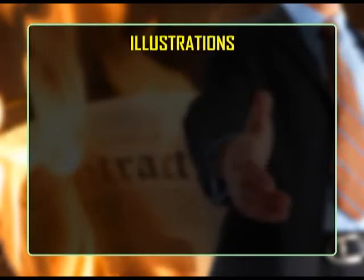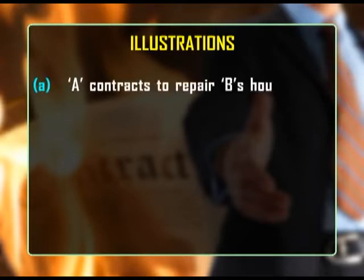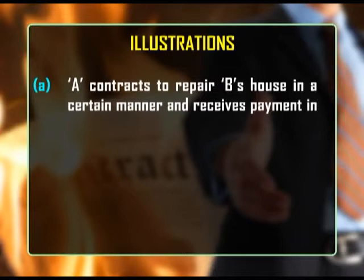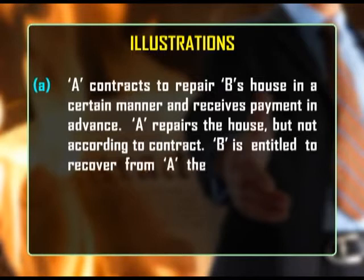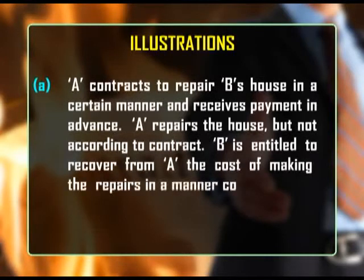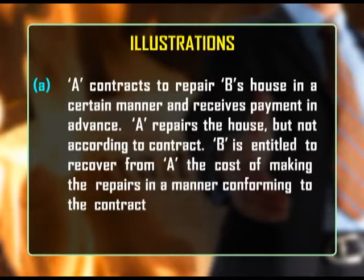Now let us look at some of the illustrations. A contracts to repair B's house in a certain manner and receives payment in advance. A repairs the house but not according to the contract. B is entitled to recover from A the cost of making the repairs in a manner conforming to the contract.